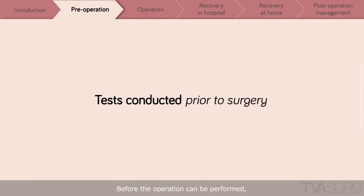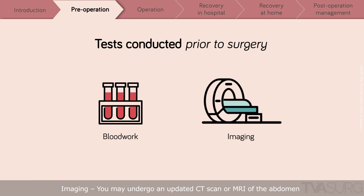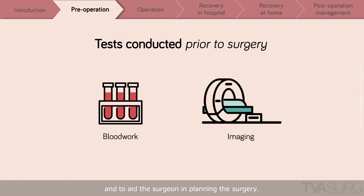Before the operation can be performed, additional tests may be required. Blood work: you will have several routine blood tests, including blood count and nutritional markers, to ensure you are healthy enough to undergo surgery. Imaging: you may undergo an updated CT scan or MRI of the abdomen to assess the extent of Crohn's disease and to aid the surgeon in planning the surgery.